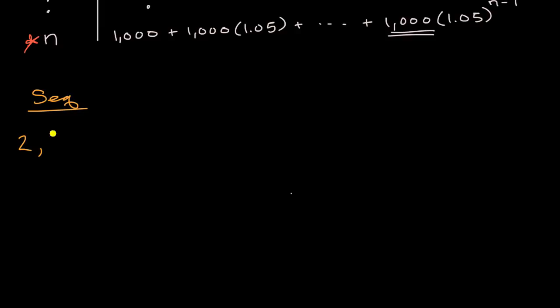So we'll go from two, two times three is six, six times three is 18, 18 times three is 54. This is a geometric sequence, ordered list of numbers.